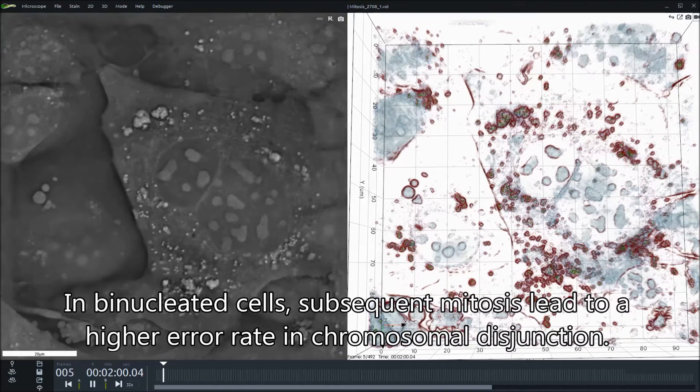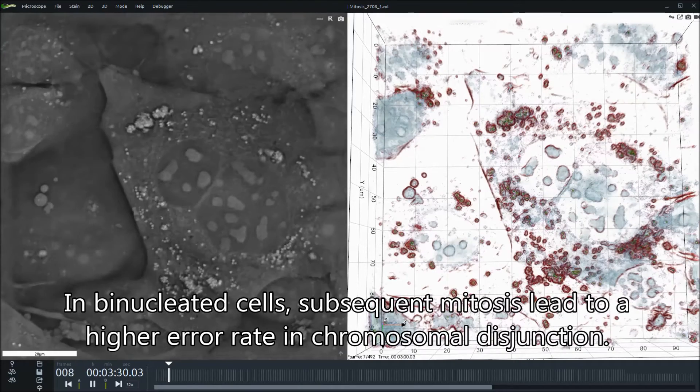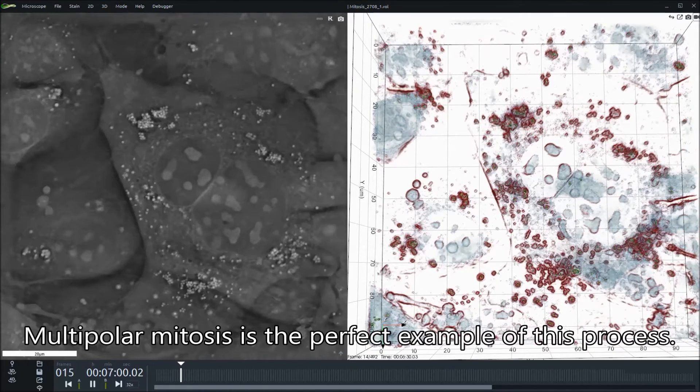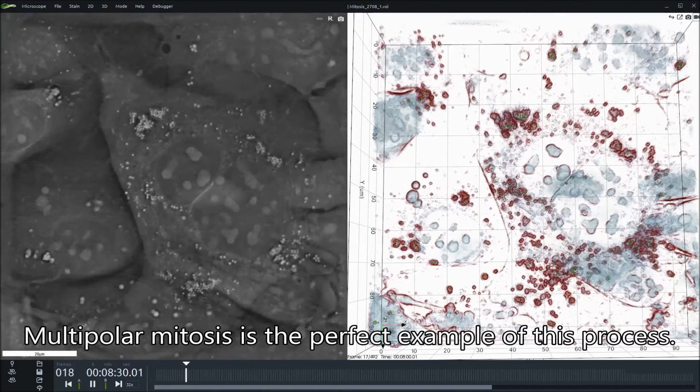In binucleated cells, subsequent mitosis leads to a higher error rate in chromosome disjunction. Multipolar mitosis is the perfect example of this process.